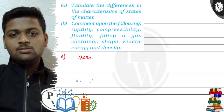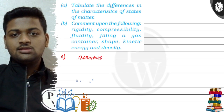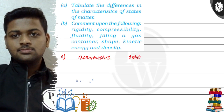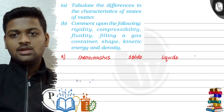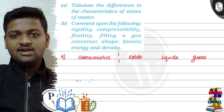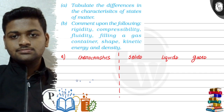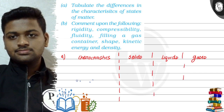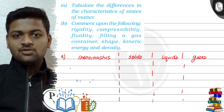So what we will do? First, we will write here 'Characteristic'. Here solids, here liquids, and here gases. We will divide the area and then we will start. So first is shape.